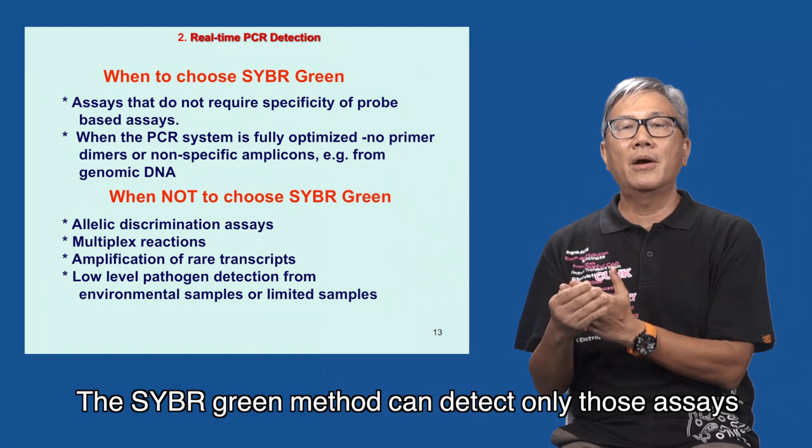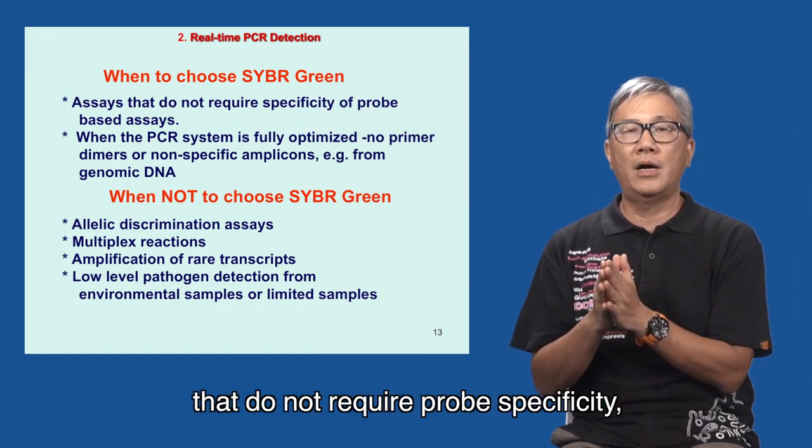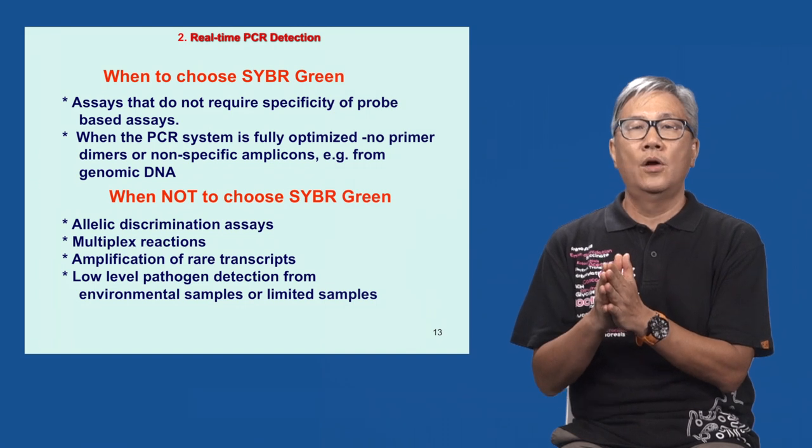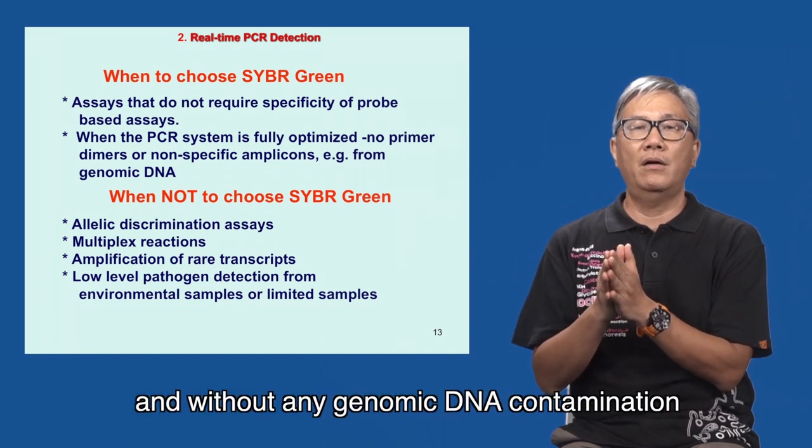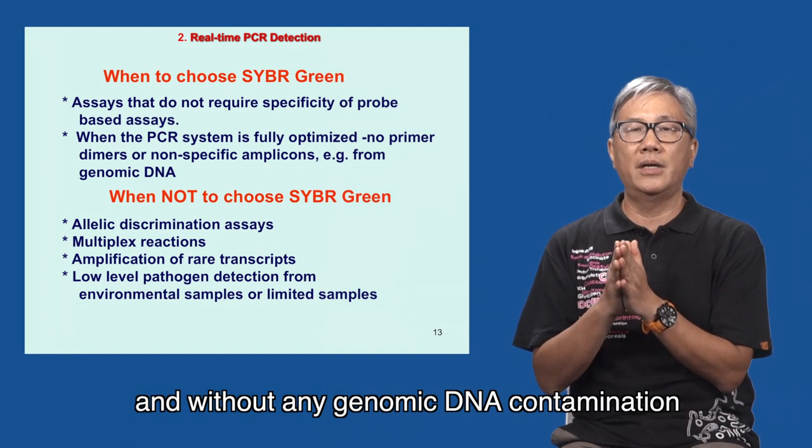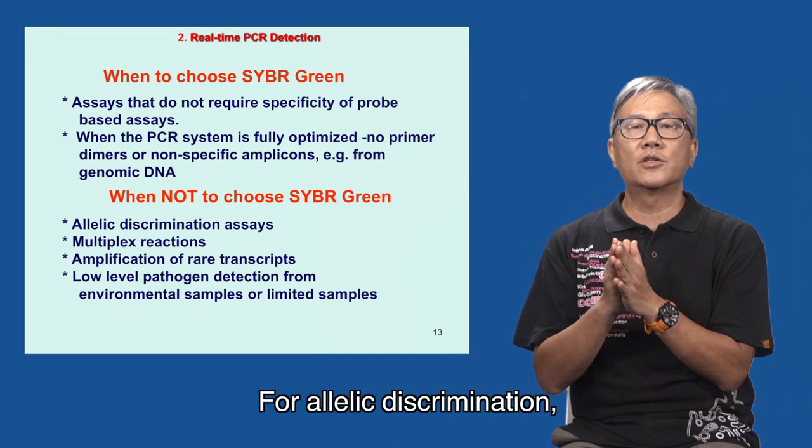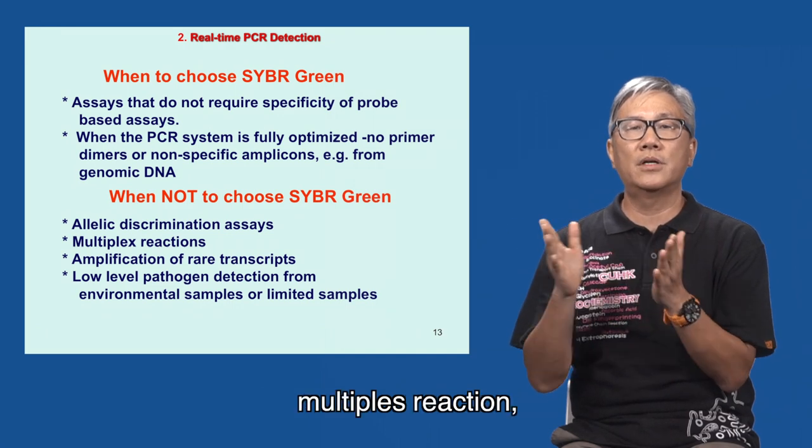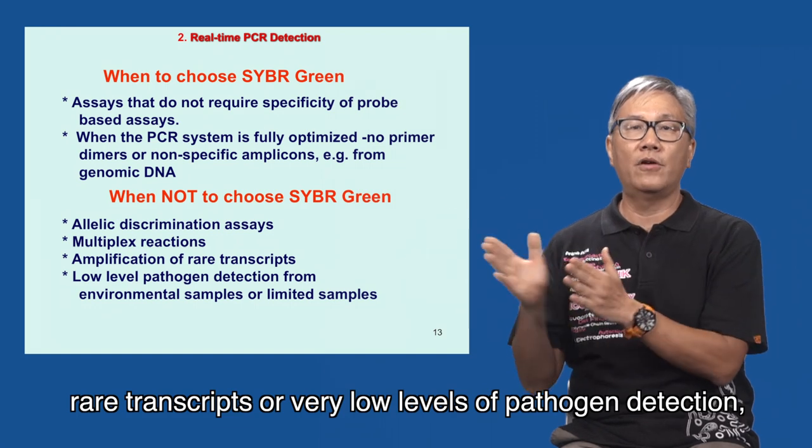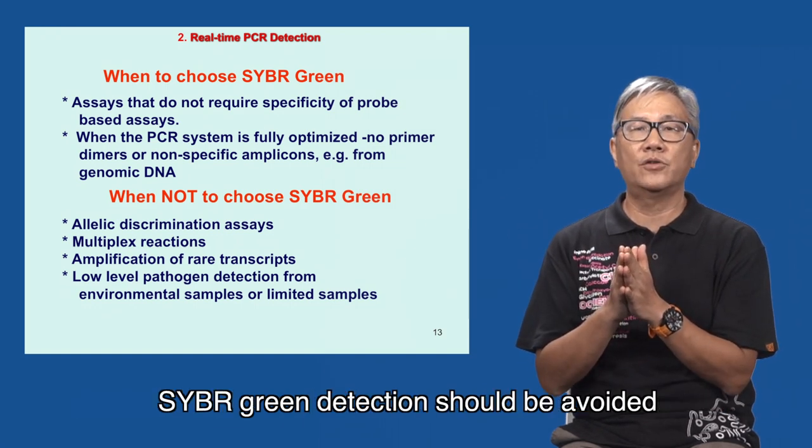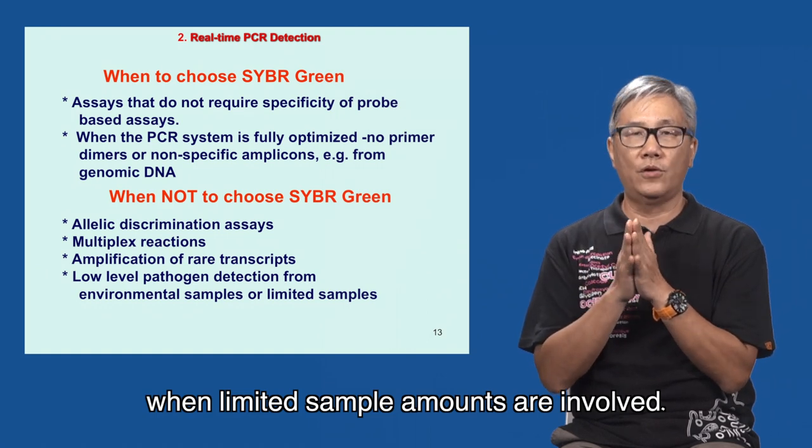The SYBR Green method can detect only those assays that do not require probe specificity, with primers fully optimized, and without any genomic DNA contamination in the samples. For allelic discrimination, multiple reactions, rare transcripts, or very low level of pathogen detection, SYBR Green detection should be avoided when limited samples are involved.